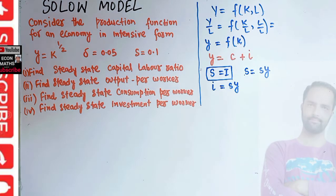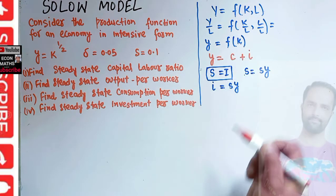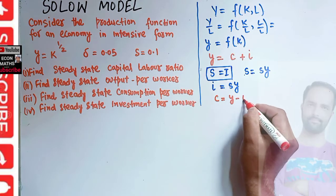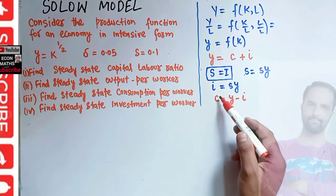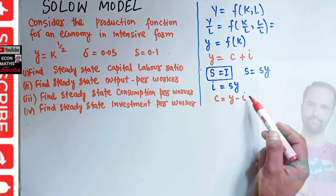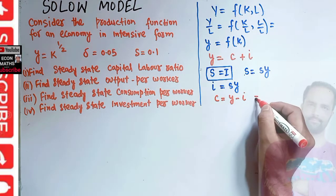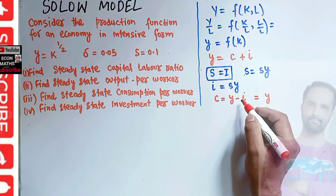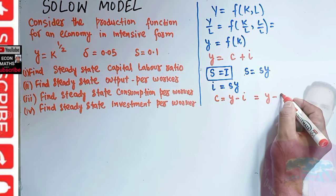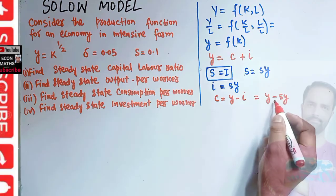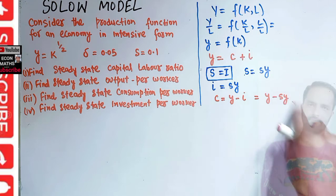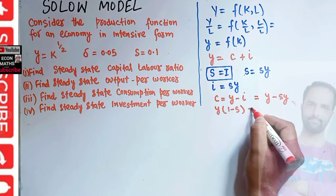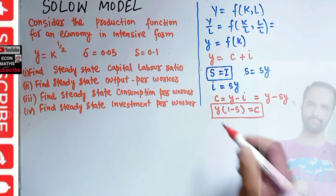Now let us solve for consumption per worker. We have c is equal to y minus i — consumption per worker equals output per worker minus investment per worker. Since i equals s times y, we get c equals y minus s times y, which gives us c equals y times (1 minus s). This is one important formula we will use.